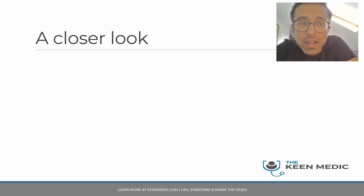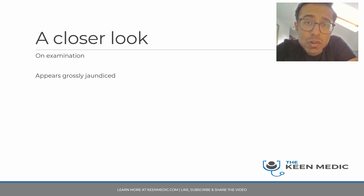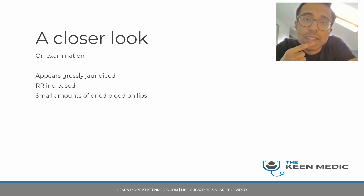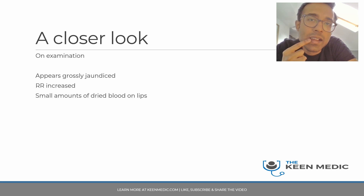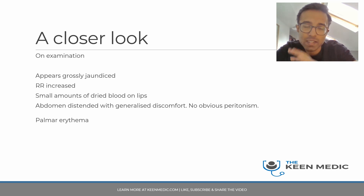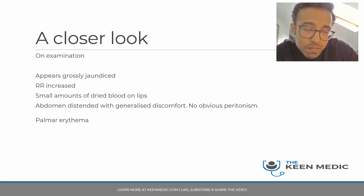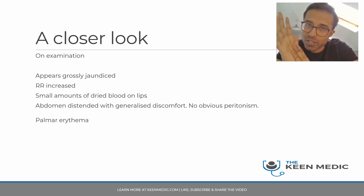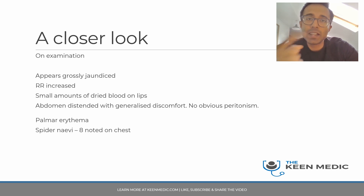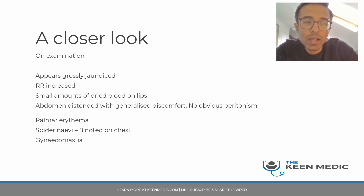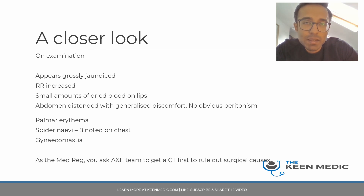Now examining the patient: he is grossly jaundiced, respiratory rate is raised, and there is small amounts of dried blood on his lips — old, clotted, nothing fresh. His abdomen is distended with generalized discomfort throughout; no obvious peritonism. He has palmar erythema, eight spider naevi on the anterior chest — above five is significant — and gynecomastia.